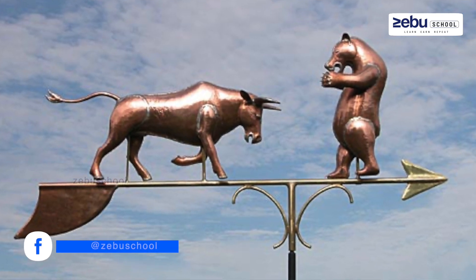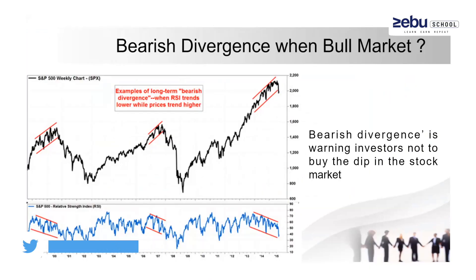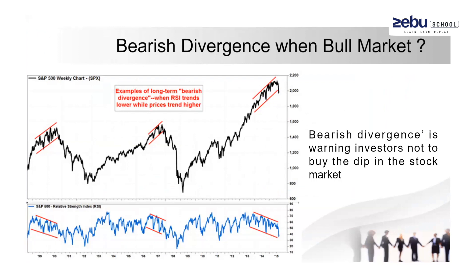Bearish divergence can happen in both bull market and bear market. If bearish divergence is happening in a bull market, this is a most important precaution indicator for investors. Whenever new dips come, people should avoid them completely, because that dip is a fake dip. When bearish divergence appears in a bull market, it is a prior indication to traders that the market will fall afterwards.